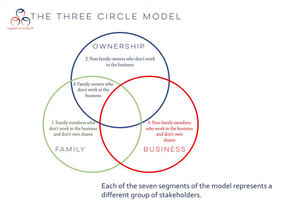Then the overlaps. Number four: family owners who don't work in the business. Number five: non-family owners who work in the business. Number six: family members who work in the business but don't own shares. And then those in the center — number seven — family owners who work in the business. Very often you'll find in segment seven those who have significant leadership positions in the business.